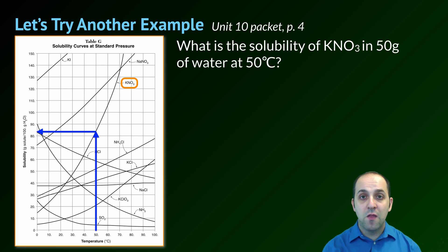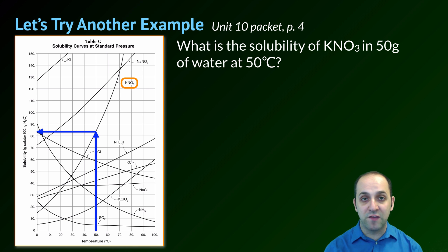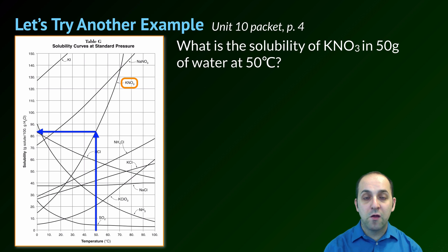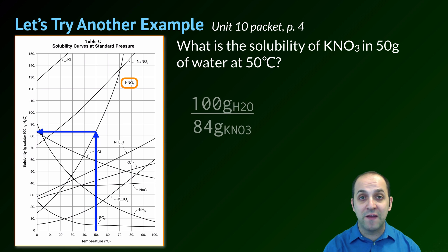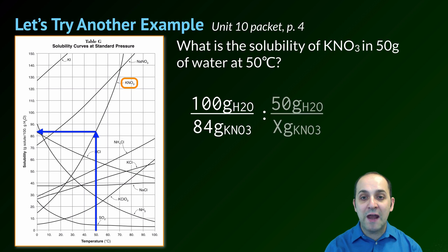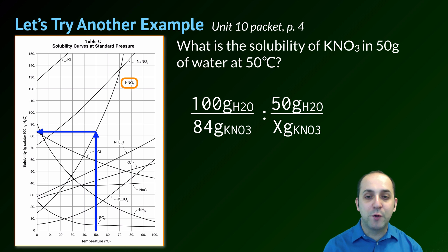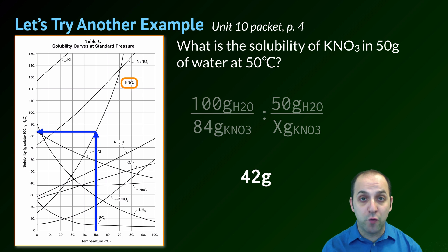Let's look at another problem, also on page 4: what is the solubility of potassium nitrate in 50 grams of water at 50 degrees Celsius? Reference table G only talks about 100 grams of water, but I can use a proportion to get the answer I need. I know that 84 grams of potassium nitrate dissolve in 100 grams of water. I can use that to solve for the amount that dissolves in 50 grams of water by setting up a proportion, cross multiplying, and dividing. In this case I get 42 grams as my answer.